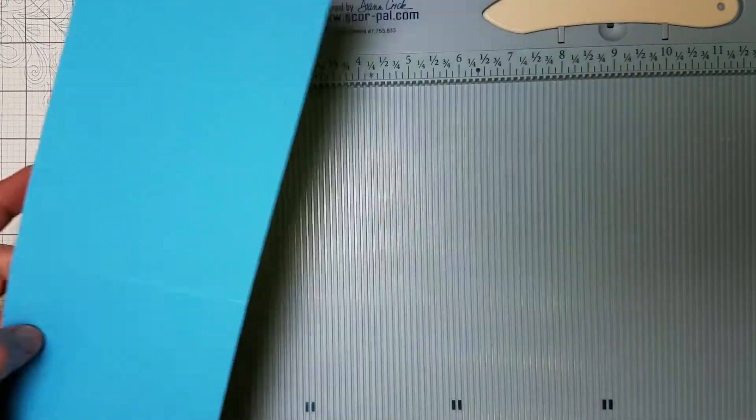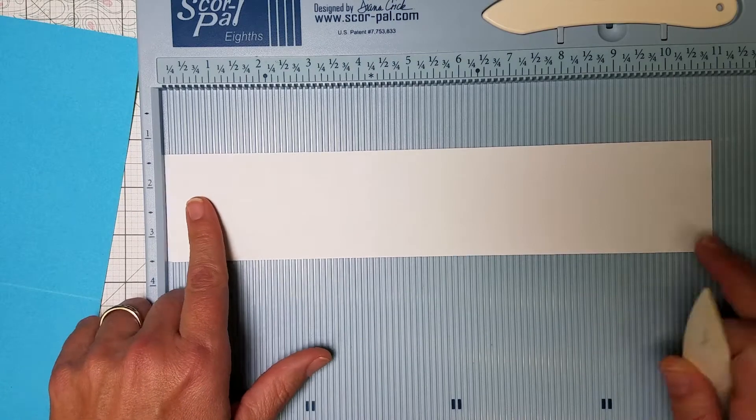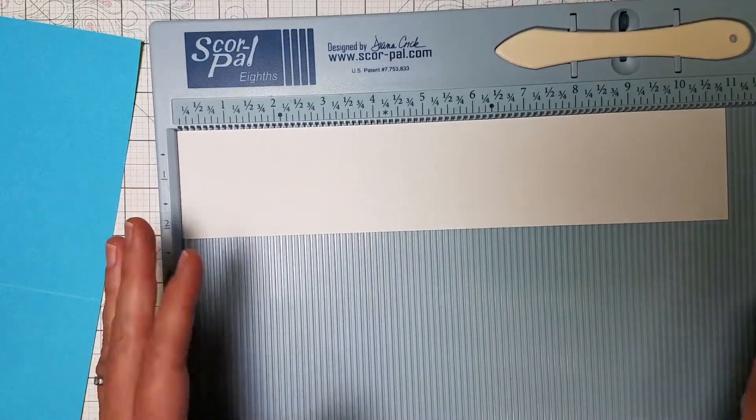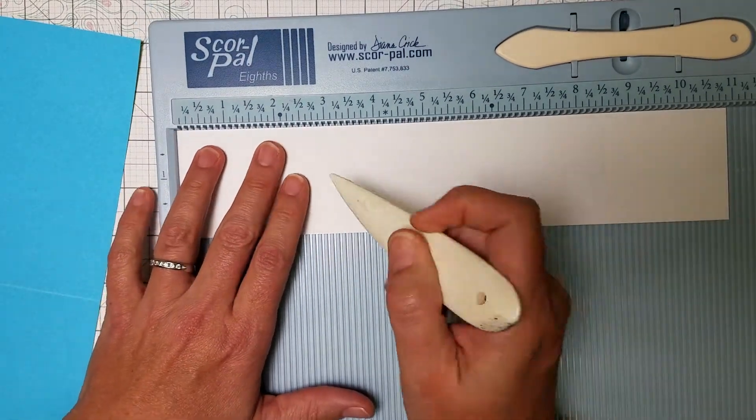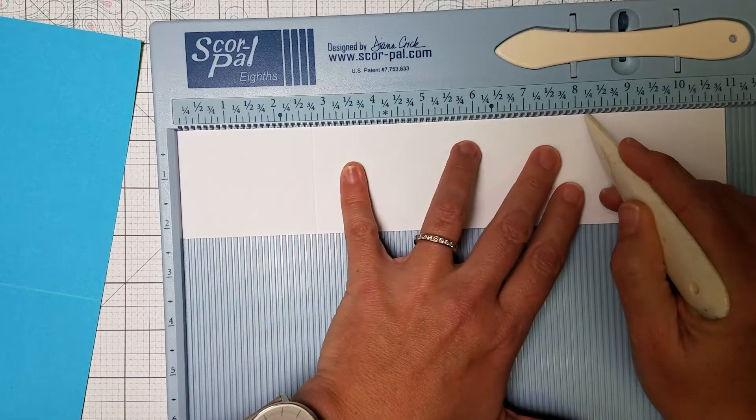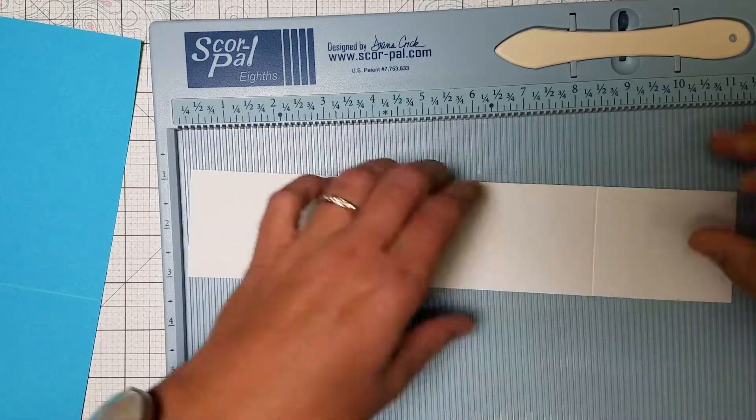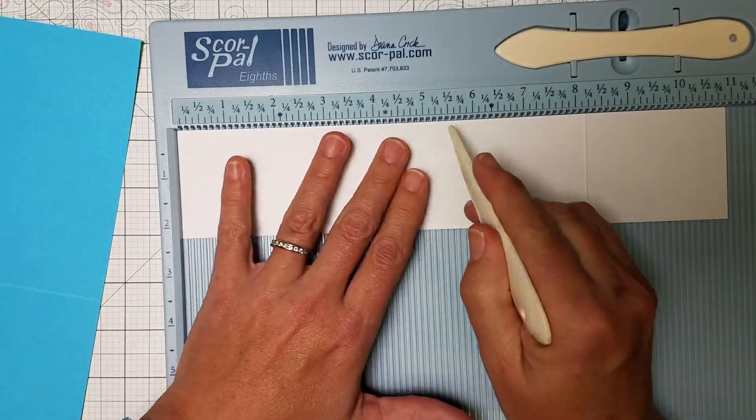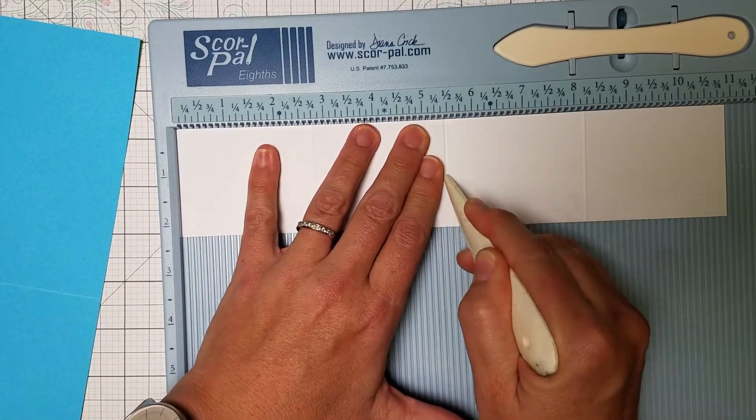Set that aside and I'm going to take the 2.25 by 11 inch white strip that we also cut during the trimming process and score it horizontally at 2.75 and 8.25. Then I'm going to flip it and score at the middle because this will end up being an accordion fold, and by flipping it, then all of the scores are on the correct side of the paper.